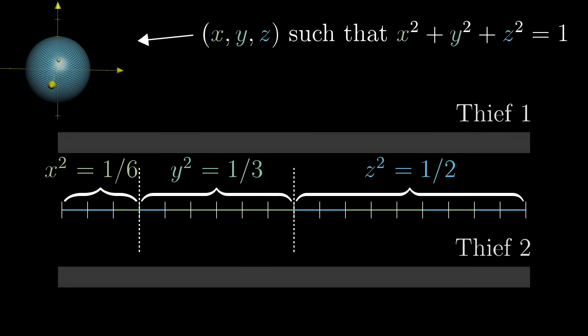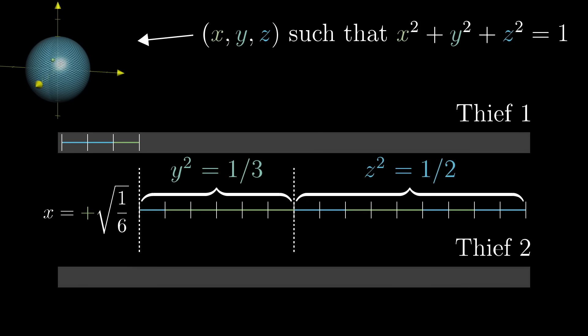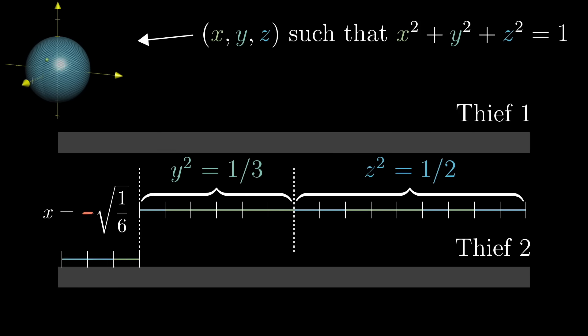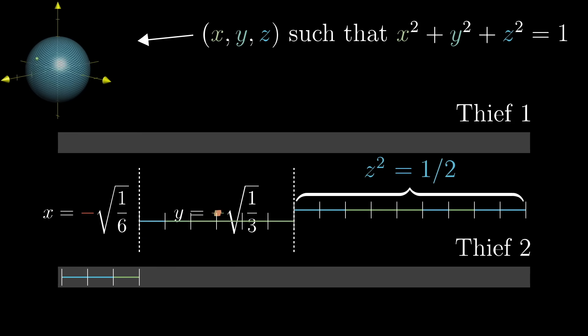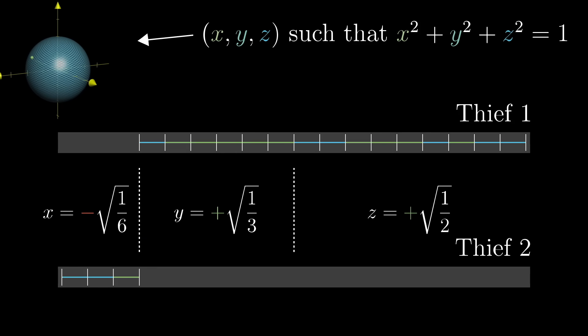For that first piece, if x is positive, give it to thief one, otherwise give it to thief two. For the second piece, if y is positive, give it to thief one, otherwise give it to thief two, and likewise give the third piece to thief one if z is positive, and to thief two if z is negative.